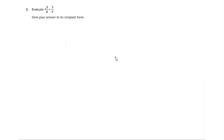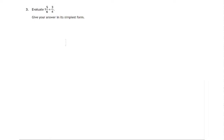So here we have a fraction question, and it's paper 1 — no calculators. 1 and 5 sixths divided by 3 quarters. So let's write that down: 1 and 5 sixths divided by 3 quarters.